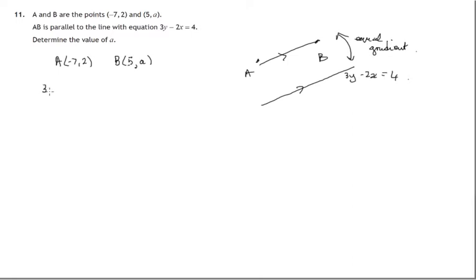Let's first look at 3y - 2x = 4 and work out the gradient of that line. We'll do that by moving it into a different form, rearranging it where we have y = mx + c.